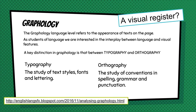That brings us to the language level of graphology, which is probably the most underused of the language levels. I like to think of graphology in terms of how texts create their own distinctive visual register — the aspects of a text that perhaps create a distinctive visual tone. Graphology as a language level refers to the appearance of texts on the page. As students of language, we're interested in the way that visual appearance and language interplay.